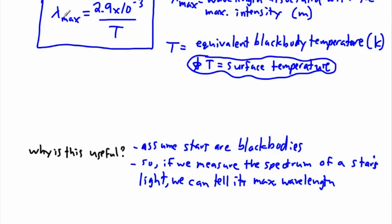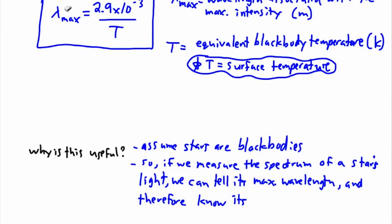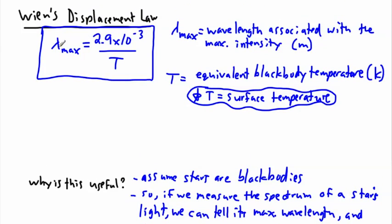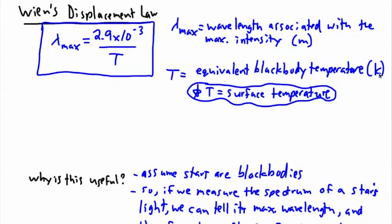So if we do the spectrum, we can actually measure this lambda max and therefore know its temperature — we'll carefully call it its surface temperature, or its equivalent black body temperature. That's really awesome. So that means if we see stars that appear redder, that lambda max being redder tells us the temperature is fairly low. If we see a star that appears bluer or whiter, we know its temperature is higher. That's really useful. That's how we deal with Wien's Displacement Law.